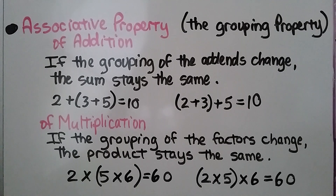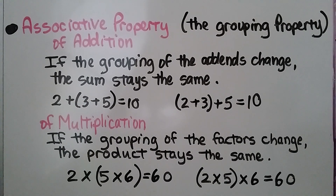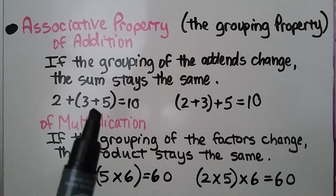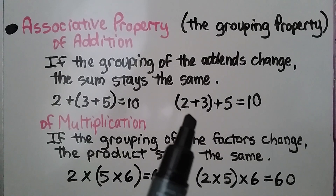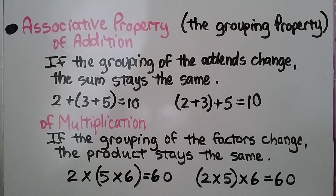The associative property is also called the grouping property. The associative property of addition says if the grouping of the addends change, the sum stays the same. So we have the addends 2, 3, and 5. We can add them grouping the 3 and the 5 together — that's 8 — and 2 plus 8 is equal to 10. Or we can group the 2 and 3 together and get 5 plus 5, which is equal to 10.